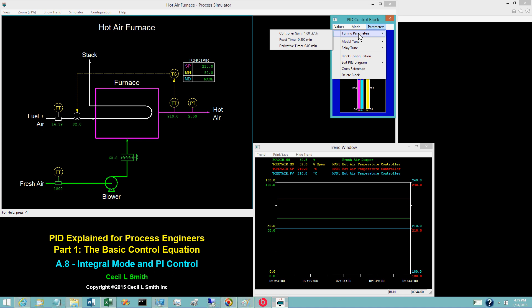The tuning coefficients for the hot air temperature controller are a controller gain of 1.0 percent per percent and a reset time of 0.8 minutes.